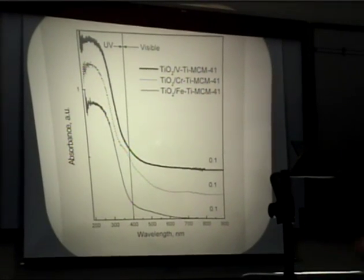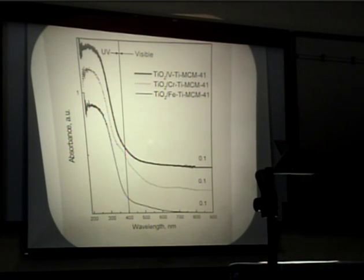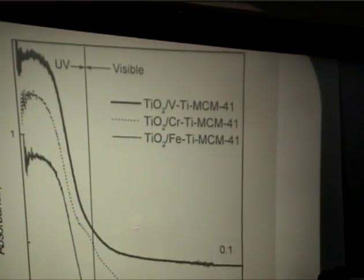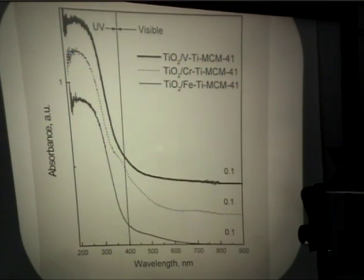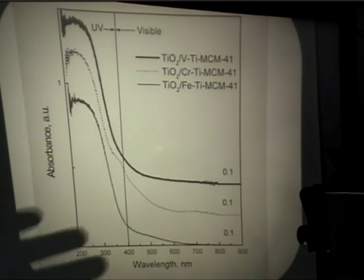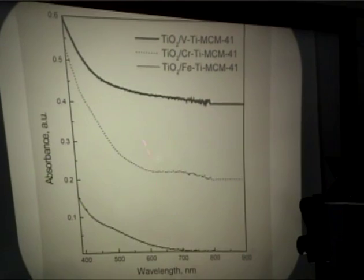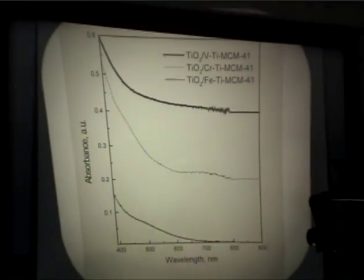Now let's see if these materials are good candidates to work in visible light. 400 nanometers is the threshold between ultraviolet and visible light. Our composite catalyst absorbs significantly in UV due to the presence of TiO2, but we also observe some absorption in visible light, which does not take place for pure TiO2 — for pure TiO2 these curves would go sharply to zero at 400 nm. If we zoom in on the visible part, we observe that the absorption is still substantial up to 600–700 nanometers.